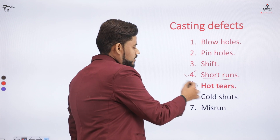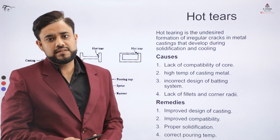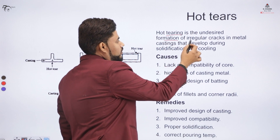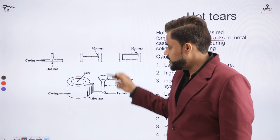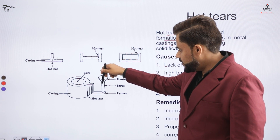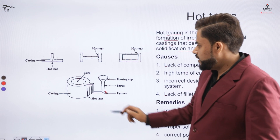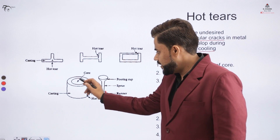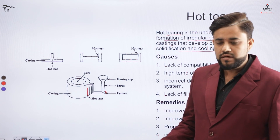Next we cover hot tears — a very interesting defect name. Hot tearing or hot tears is an undesired formation of irregular cracks in the metal casting that develop during solidification and cooling. In the diagram, you can see a pouring cup and sprue; the metal goes through the runner and fills the cavity. During solidification, a crack develops on the surface — that is called a hot tear.